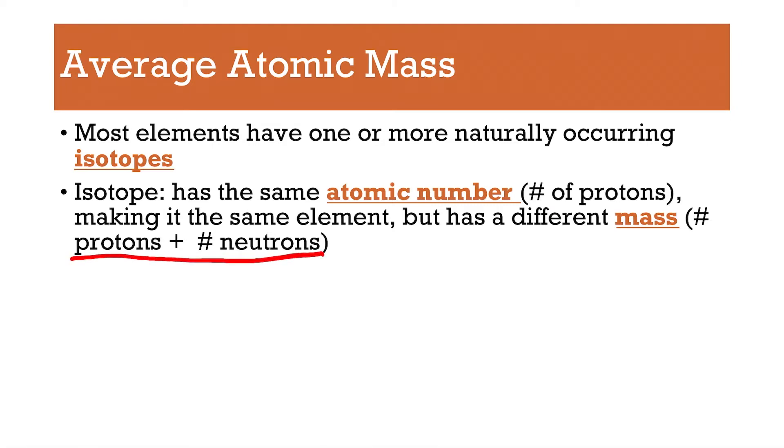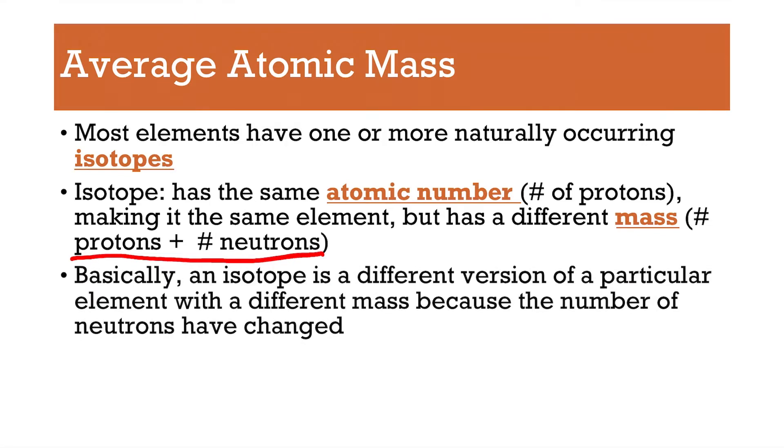So remember, mass is protons and neutrons. So an isotope is a different version of an element with a different mass, because the number of neutrons has changed. So remember the other day, I had showed you a picture of Joey from Friends.